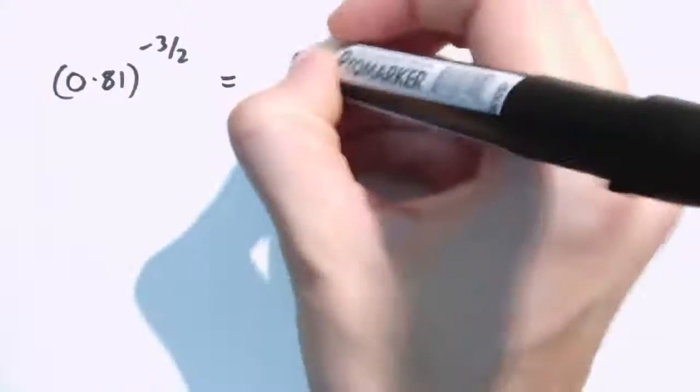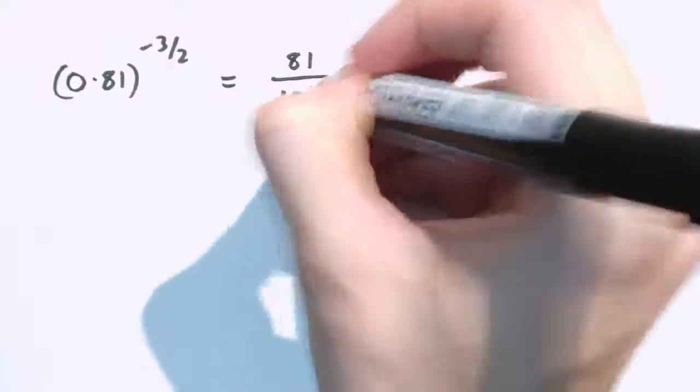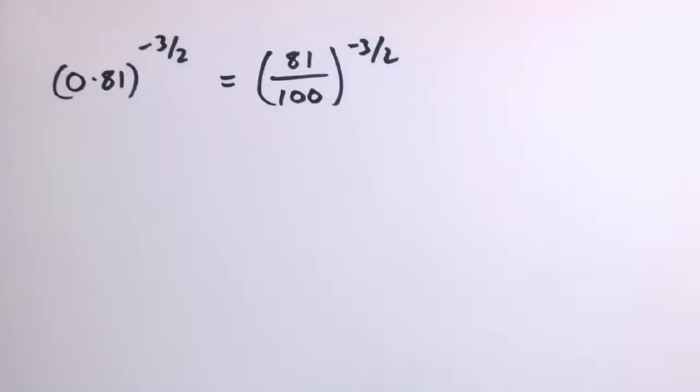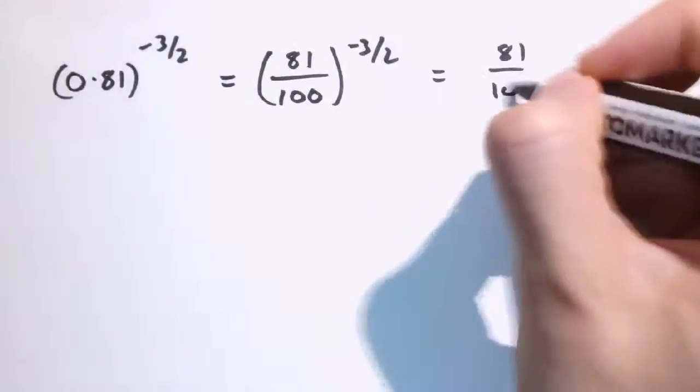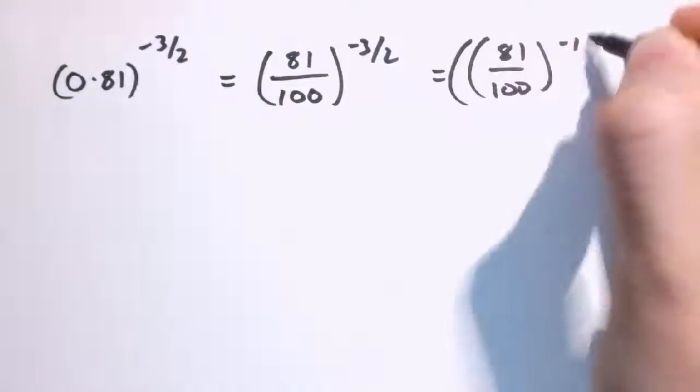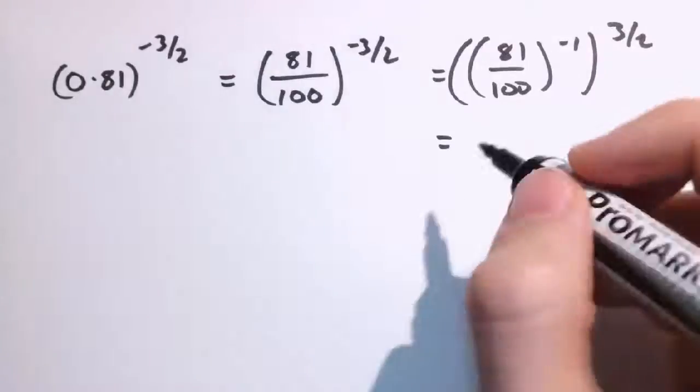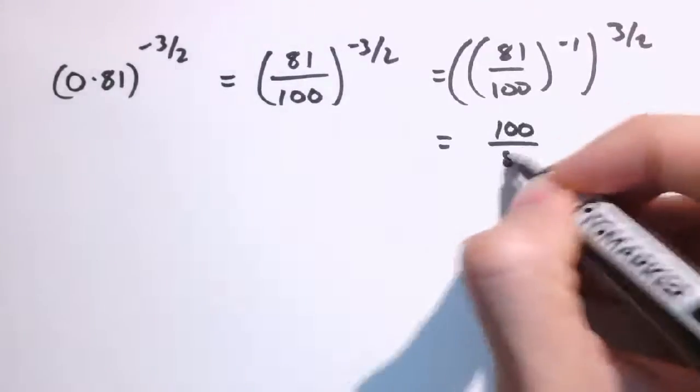Okay, here's a really hard one. 0.81 to the minus 3 over 2. It might help if we write 0.81 as 81 over 100, because then we can deal with the minus bit quite easily, because that's then 81 over 100 to the minus 1 to the 3 over 2, so the reciprocal of 81 over 100, turn the fraction upside down, gives 100 over 81.